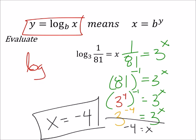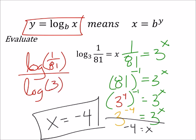We'd have the log of 1 over 81, which for your calculators, you probably have to use parentheses for that fraction. And we'd divide it by the log of the base, which was 3. And if you do that, you should get negative 4.